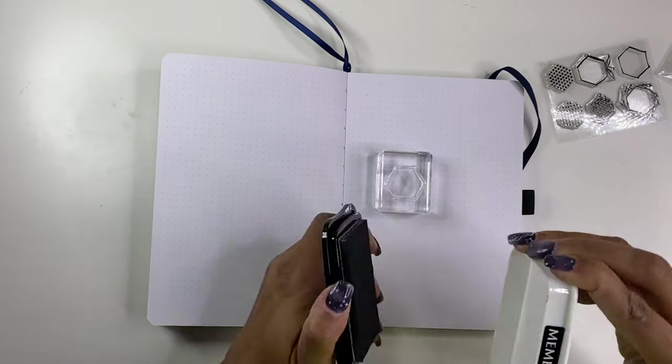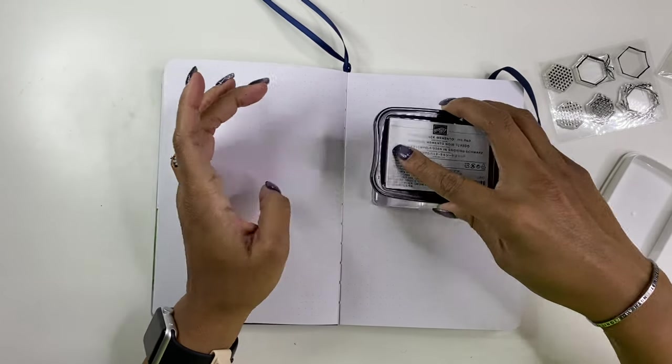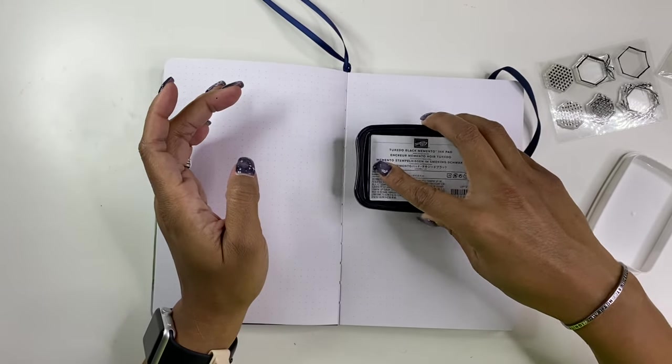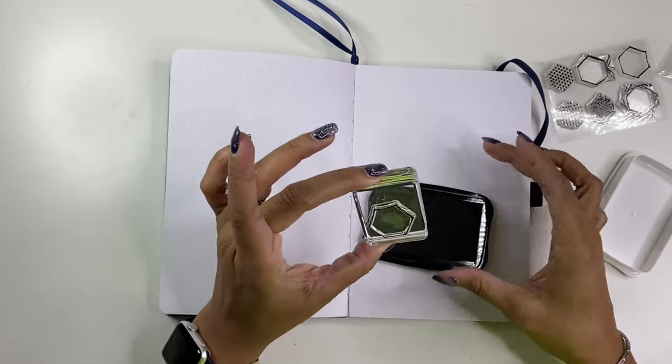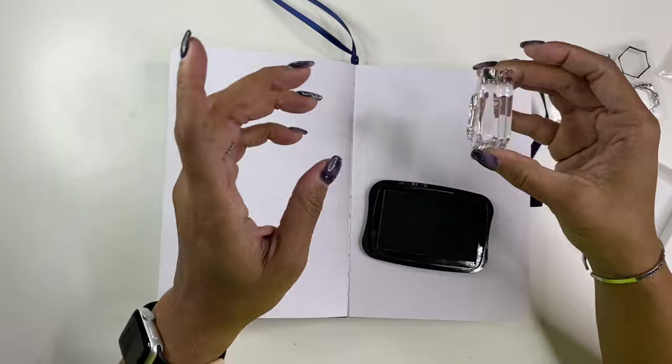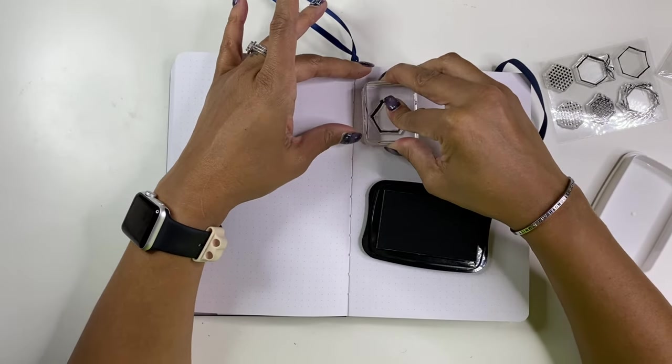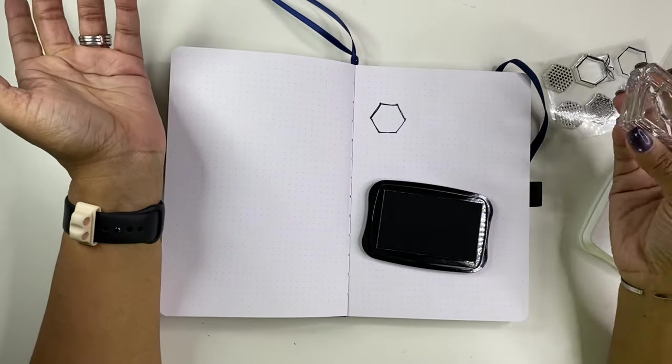So I'm going to take this stamp and now it's adhered to my acrylic block. A lot of people take the time and actually line them up. I don't really feel the need to do that because it's clear, so I can see where I'm going to place it. And for my ink, I like to go this way because I feel like it gives you more control. Let me just stamp it this way and then we'll do it the other way.